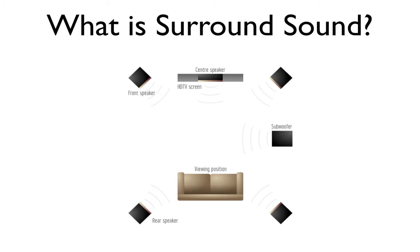Understanding surround sound is actually pretty easy. All you need to know is that each speaker channel corresponds to one speaker placed around the room. You have three speakers placed in the front — one on the left side, one on the right side, and one in the center. You have two more speakers placed behind the listener, one on the left side and one on the right side, and then of course you have the subwoofer, which could be placed nearly anywhere in the room according to the desired low-frequency sounds you're looking for.